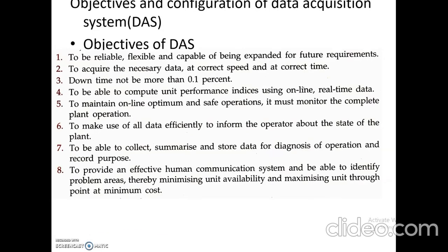Now let us see the objectives and configuration of data acquisition systems. The objectives of a data acquisition system are summarized into eight points. The first is to be reliable, flexible, and capable of being expanded for future requirements. The second is to acquire the necessary data at the correct speed and at the correct time. The third is that downtime should not be more than 0.1%.